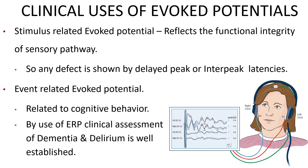Clinical uses of evoked potentials: stimulus-related evoked potentials reflect the functional integrity of the sensory pathways from the receptor to the cortex. Any defect shown by delayed peak or inter-peak latencies — such as a lesion that obstructs the sensory pathways — can be identified, which has great diagnostic value. For example, optic neuritis due to multiple sclerosis, a demyelinating disorder, can be identified.